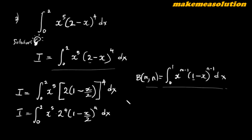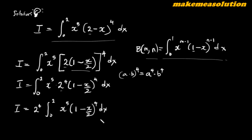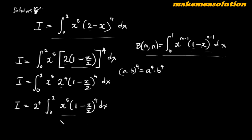By the law of indices, when two terms share a power you can split them, so 2⁴ is a constant that comes out of the integral. We now have 2⁴ ∫₀² x⁵ · (1 - x/2)⁴ dx. There's still a problem — we have x here and x/2 inside the bracket, so we need to fix that with a substitution.